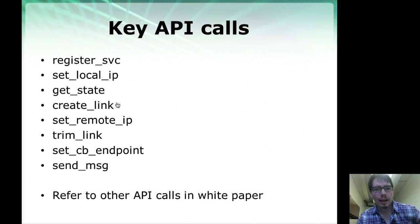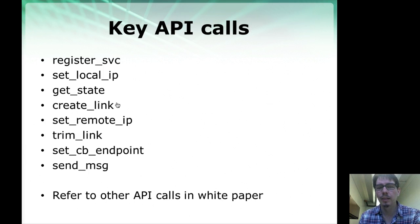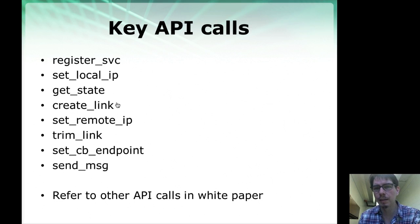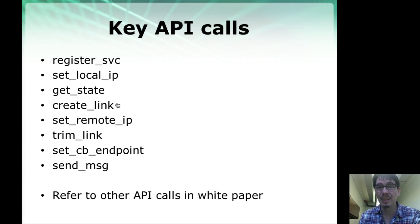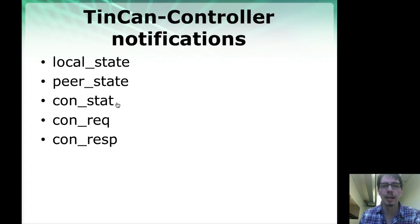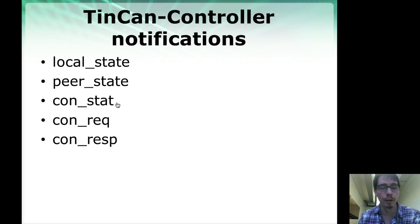These two are just two different Python controllers that use the same underlying API to communicate with Tincan. The API exposed by Tincan has a number of calls initiated by the controller, and there are a number of up-calls that come from Tincan to the controller. In our white paper on the IPOP project website, there's a lot more detail than I'm going to cover here — I'll highlight the key calls and what they accomplish, and from that point you should be able to follow the details in the white paper. There are also notifications from Tincan up to the controller.